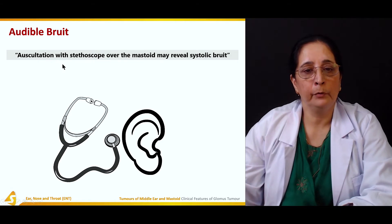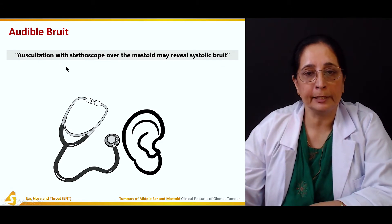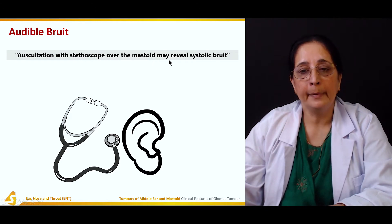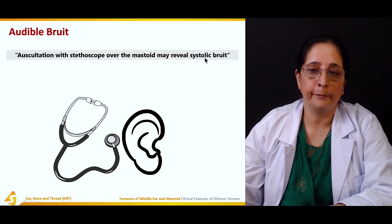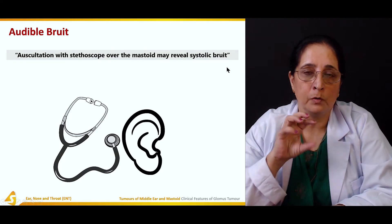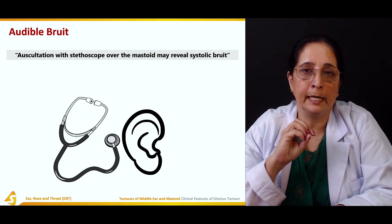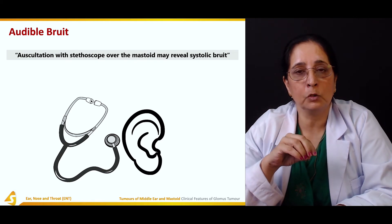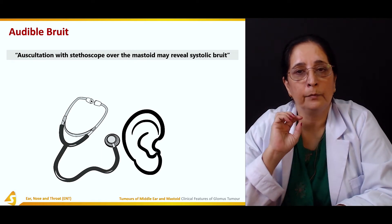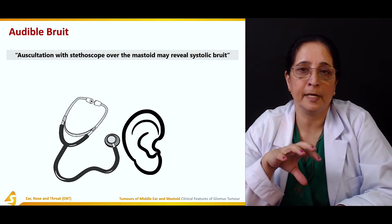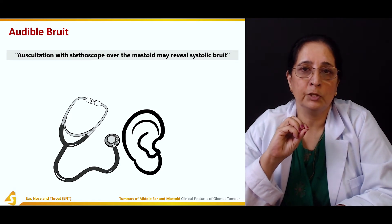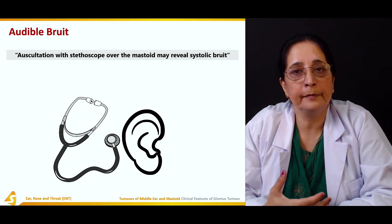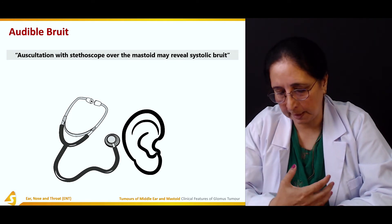Audible bruit: auscultation with a stethoscope over the mastoid may reveal a systolic bruit — a sound auscultated due to the vascular nature of this tumor, corresponding to the systolic contraction phase as blood is pushed through.